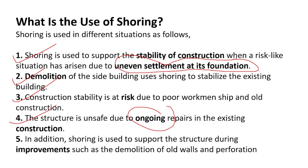The fourth reason for providing shoring is due to ongoing repairs in existing construction — for repair and maintenance purposes. The fifth reason is that shoring is used to support a structure during improvements and repairs, such as during renovation or demolition of one side of a structure.